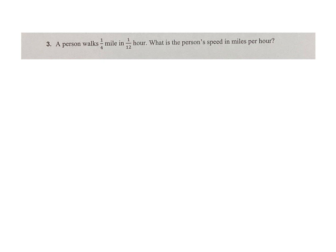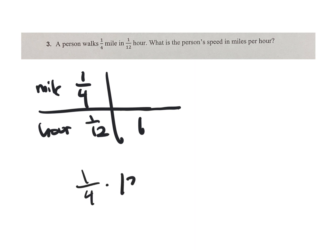A person walks 1/4 of a mile in 1/12 of an hour. What's the person's speed in miles per hour? So I've got to get that to 1. 1/12 times 12 gets me to 1. So 1/4 times 12 equals 12/4 or 3. 3 miles per hour.